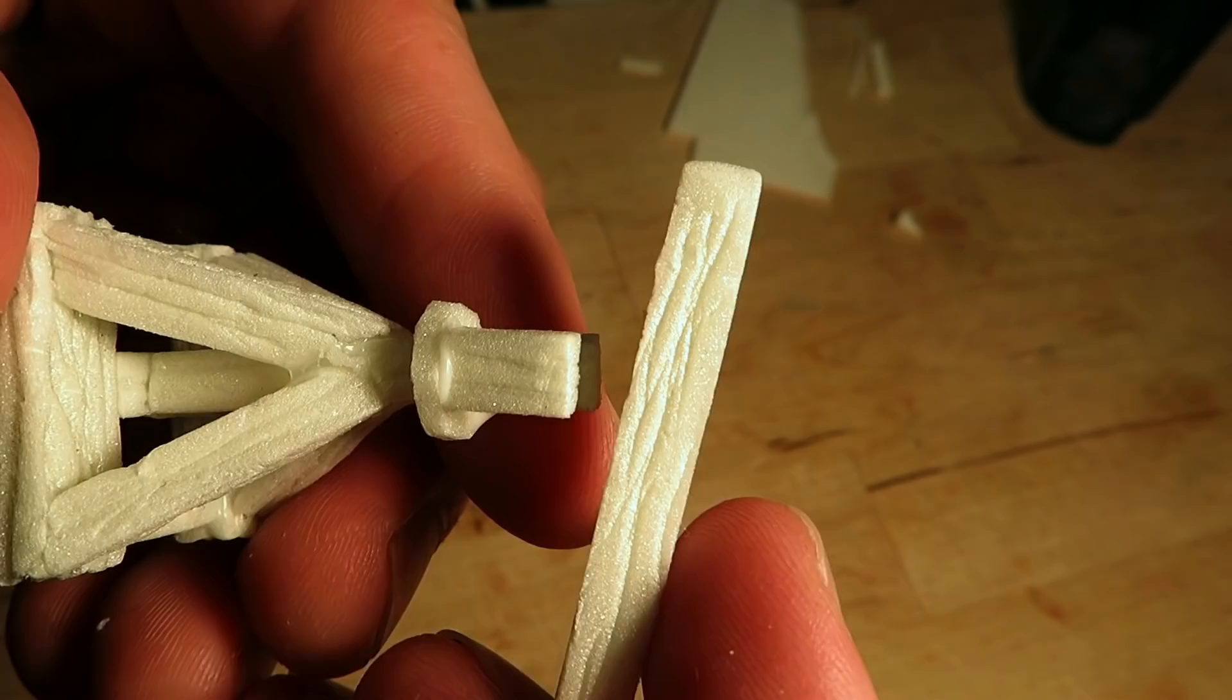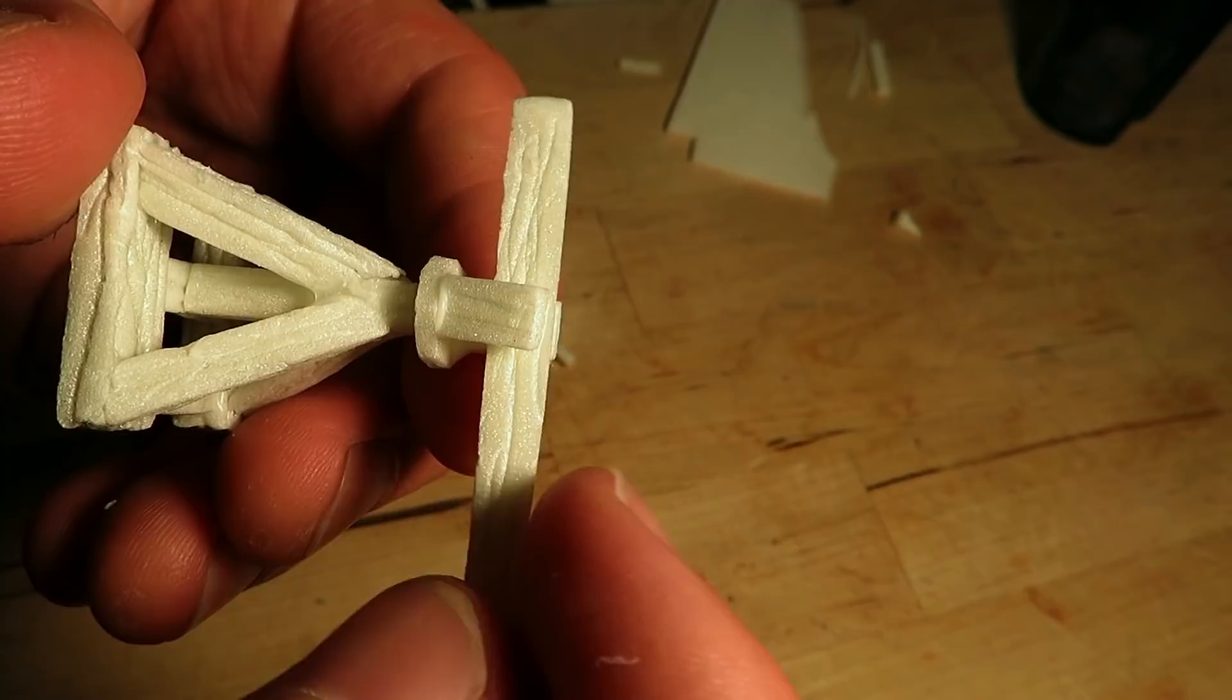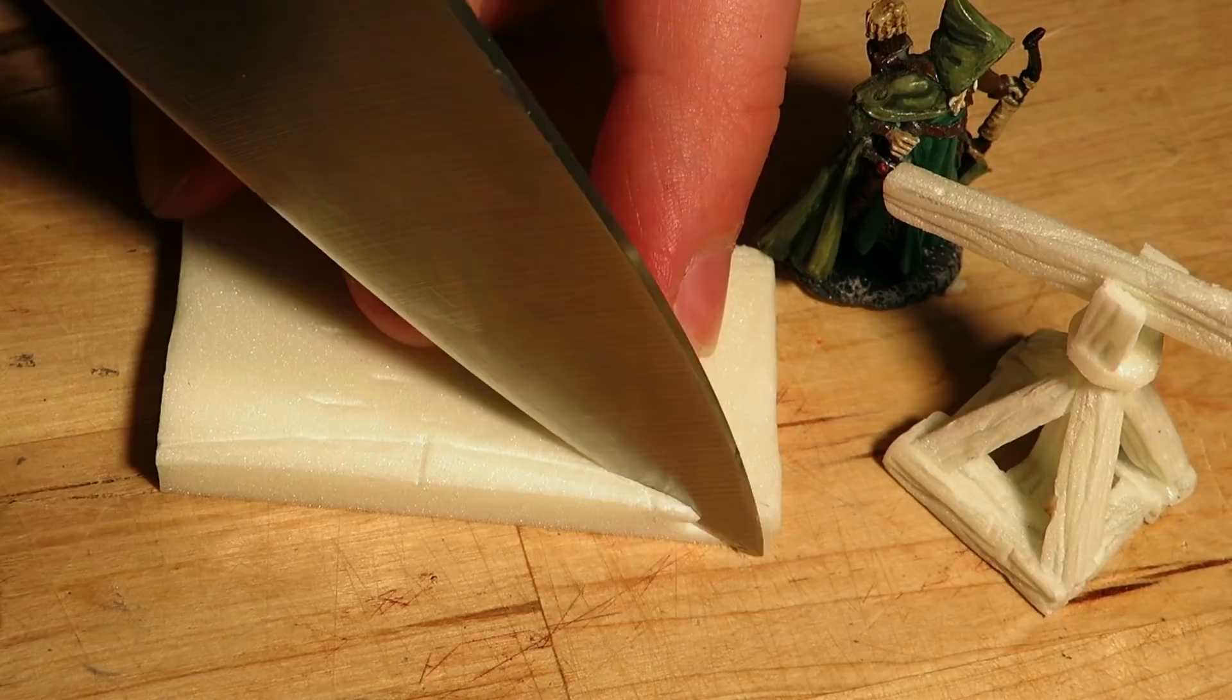This piece right here will be the stock of the ballista. We'll make the bow first. And no, this is not a realistic ballista. It's for fantasy gaming. I cut out a large bow shape from XPS foam.